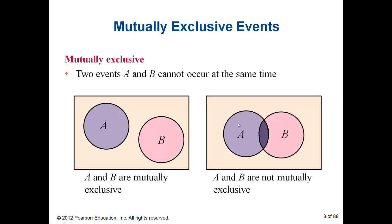On the other hand, on the right side, A and B can occur at the same time. There's an intersection between them, so they are not mutually exclusive.